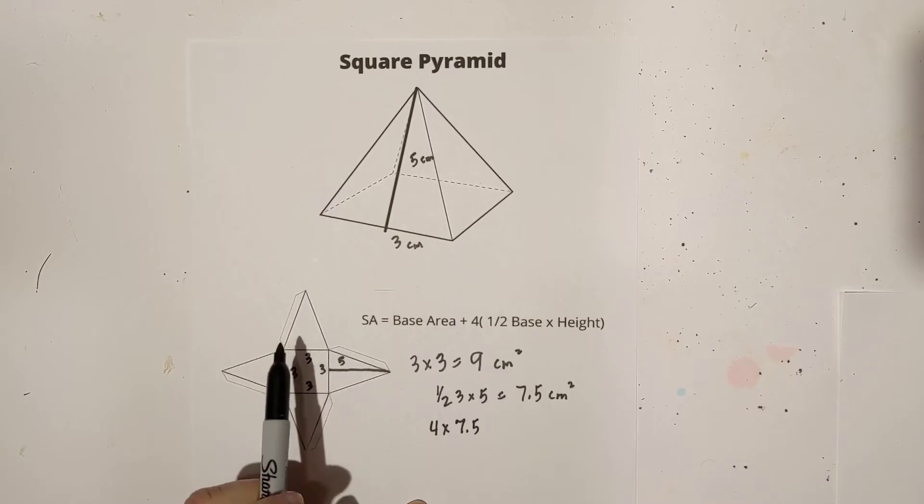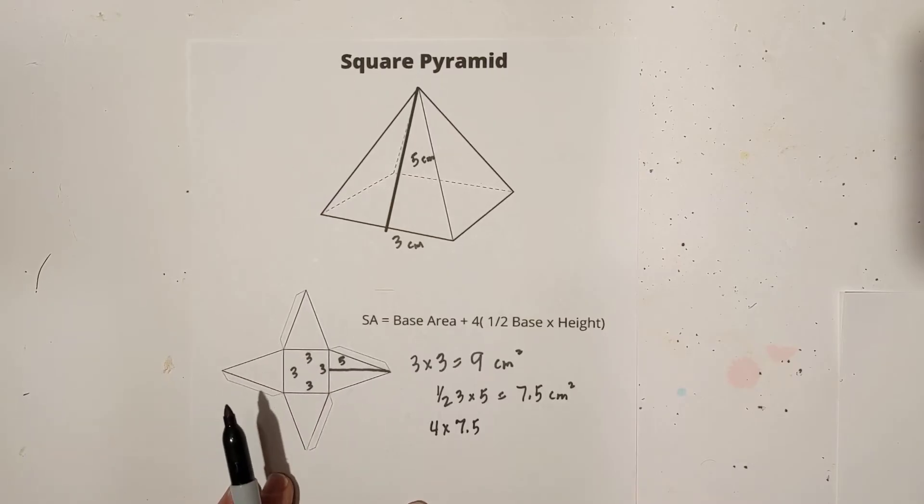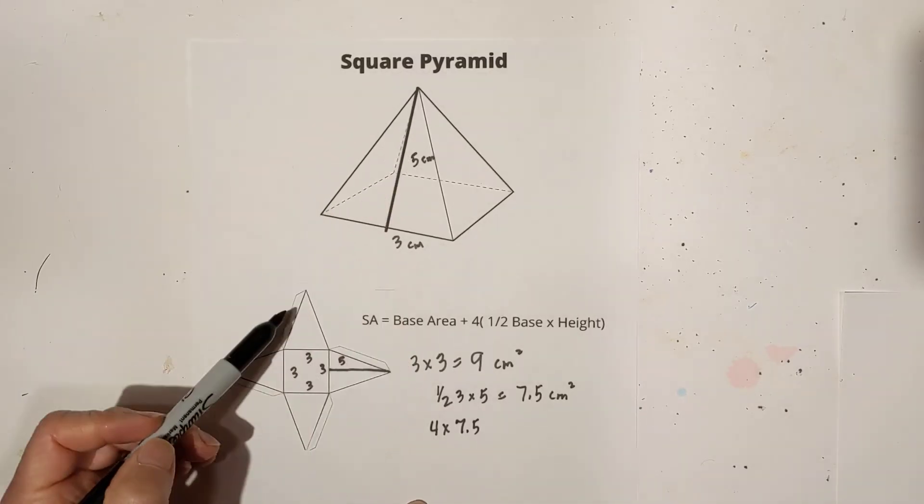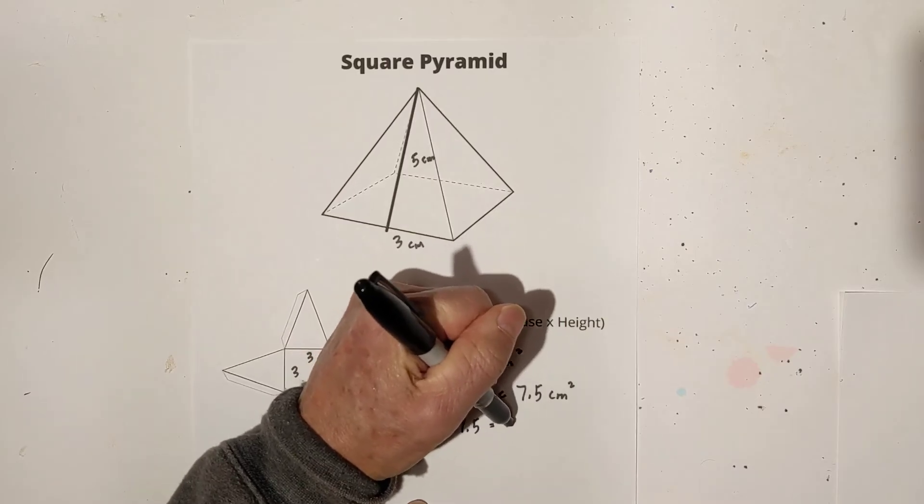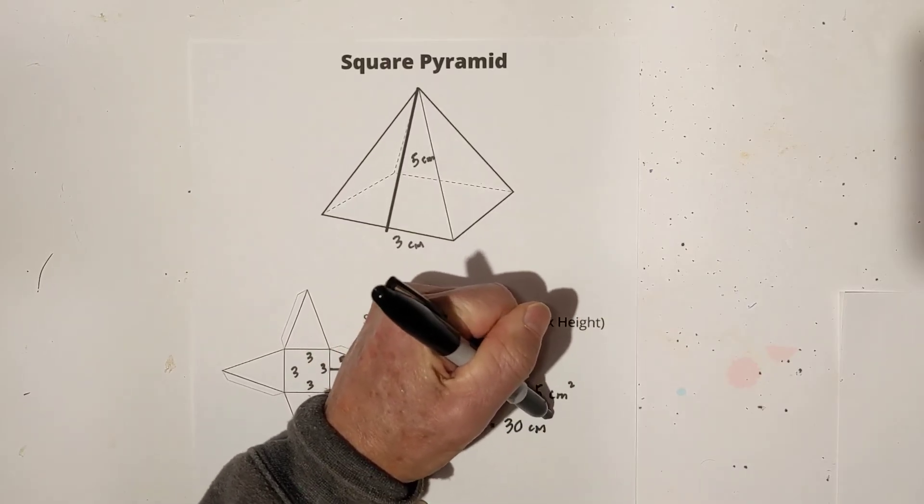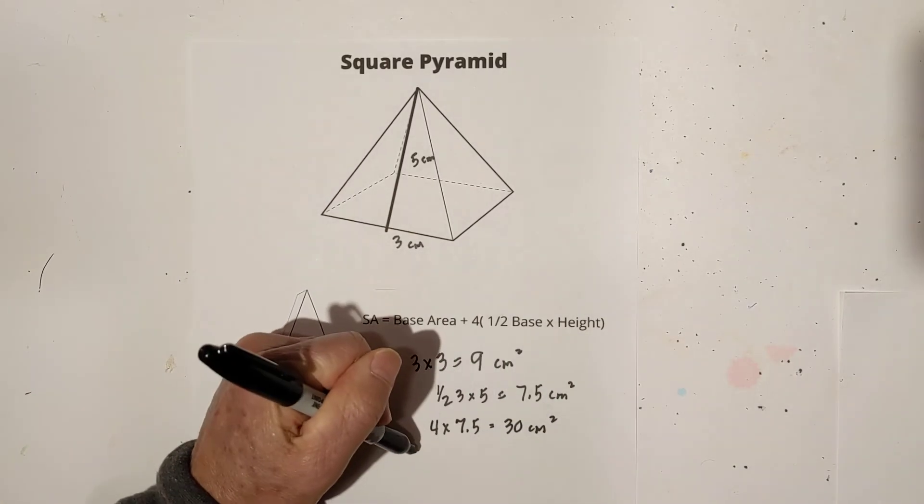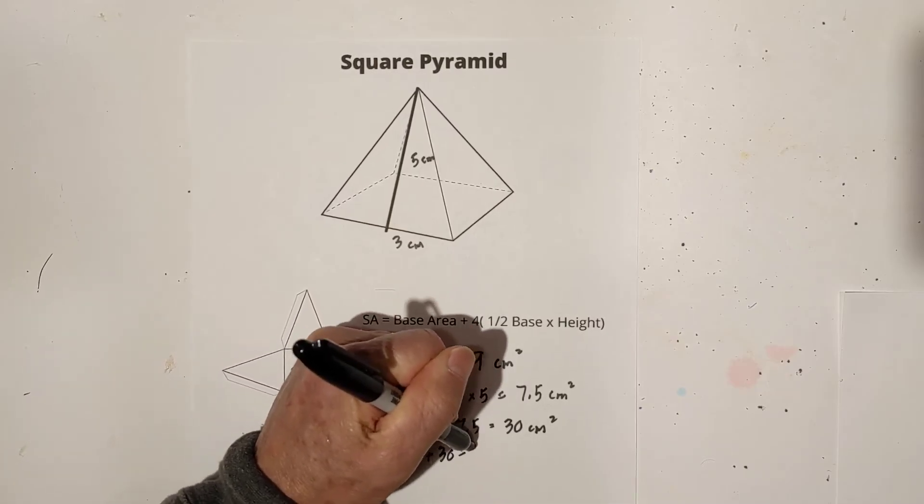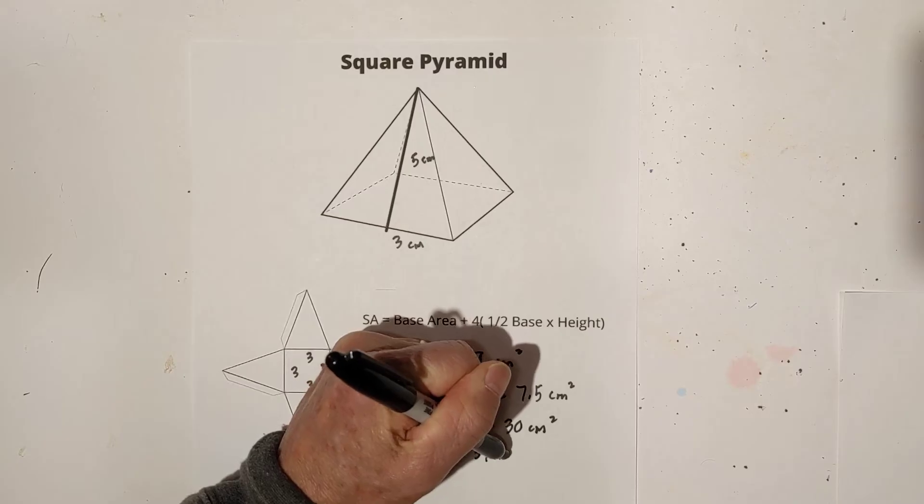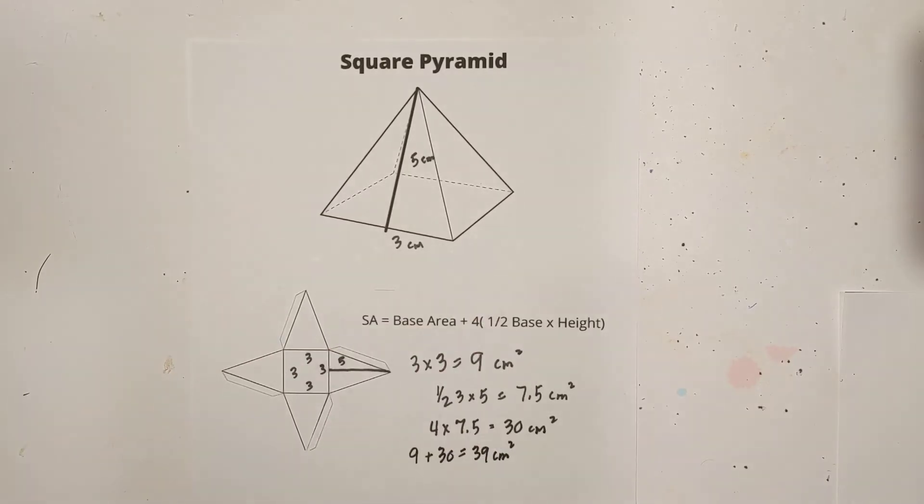Now I have to go four times seven point five. The reason why we're doing this is that you have four of these, because here's this pyramid. If you unfold it, four times seven point five is 30 centimeters squared. So I'm going to add these together: nine plus 30 equals 39 centimeters squared. That's technique number one.